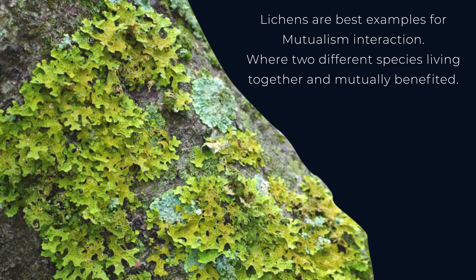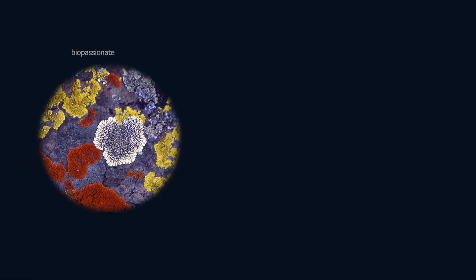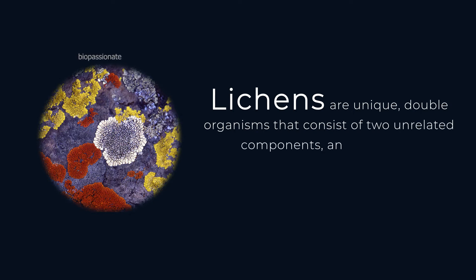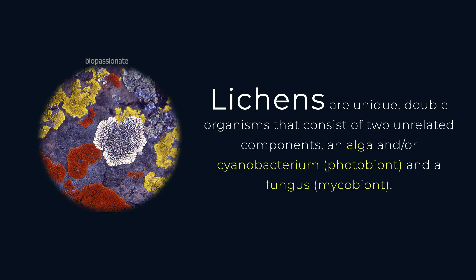Lichens are the best example of mutualism interaction — two different species living together and mutually benefited. Lichens are unique double organisms that consist of two unrelated components: the alga and the fungus. The alga can be either a green alga or a cyanobacterium.